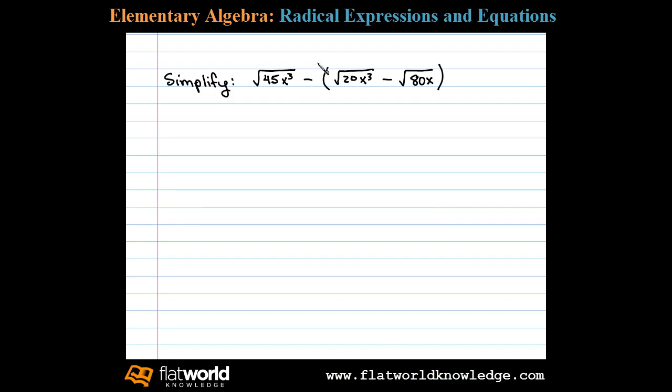Here we're asked to simplify a radical expression. We begin by applying the distributive property. We need to multiply both terms inside the parentheses by negative 1. In this case we have √45x³ minus √20x³ plus √80x. Next we simplify each term.